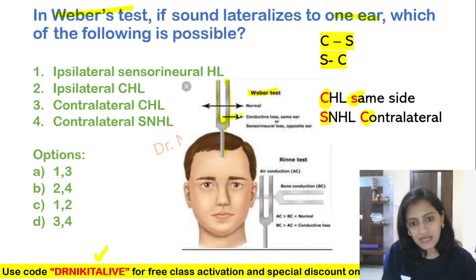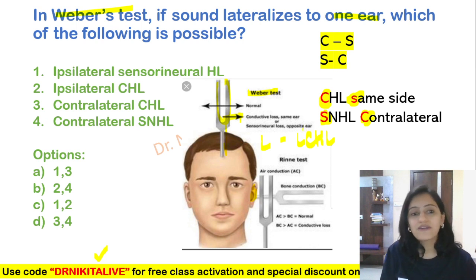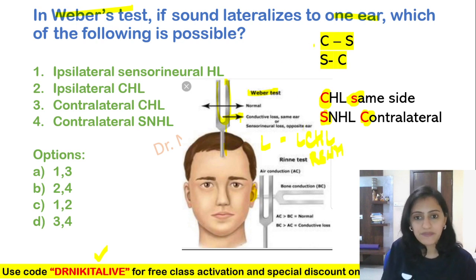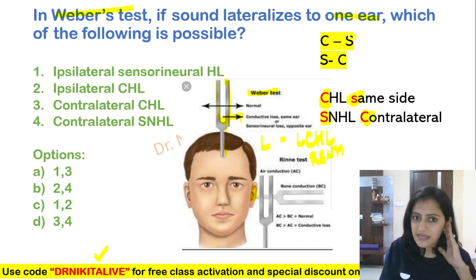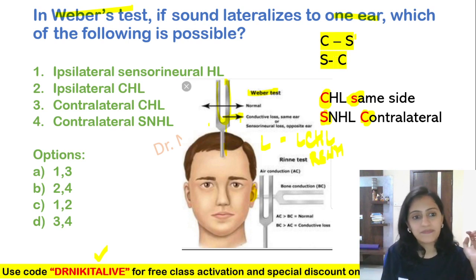If it's lateralization, like in this case going to the left ear — C is for S, conductive same side — left lateralization means left conductive hearing loss or contralateral SNHL, that is right SNHL it would be. So remember, conductive same side as the side to which it is lateralized, or it is contralateral SNHL.